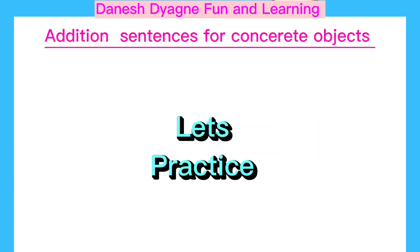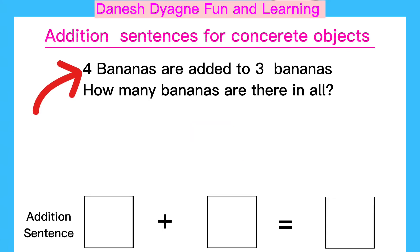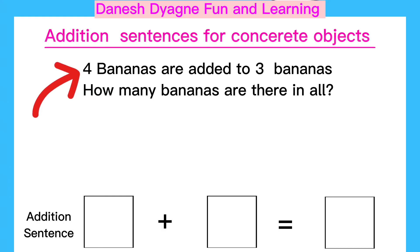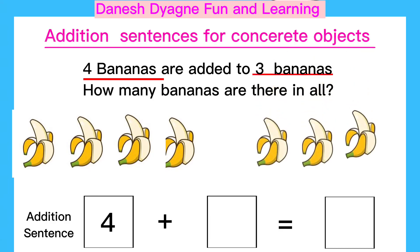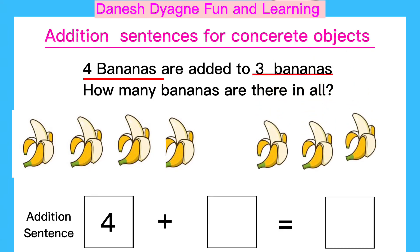Let's practice. Four bananas are added to three bananas. How many bananas are there in all? We have four bananas, so we are going to write four here. And another three bananas, so we will write three here.